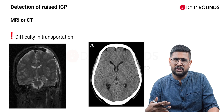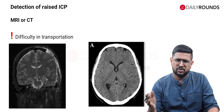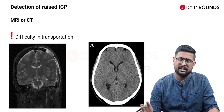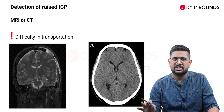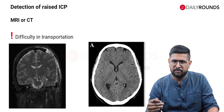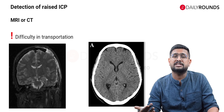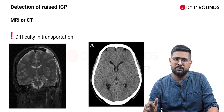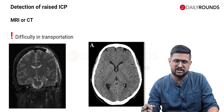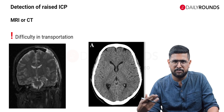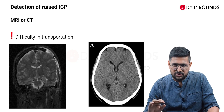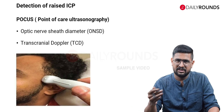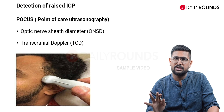The usual method followed in ED or ICU to identify raised ICP is neuroimaging — CT or MRI. For the first-time detection of raised ICP, this can be useful. But for reassessment, repeated imaging may not be an option because we need to transport the patient out of the safe zone of ED or ICU, and there is the risk of repeated radiation. Seeing the pros and cons of all these methods, another method has evolved recently: point-of-care ultrasound.